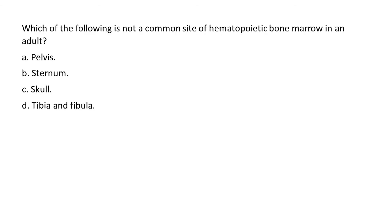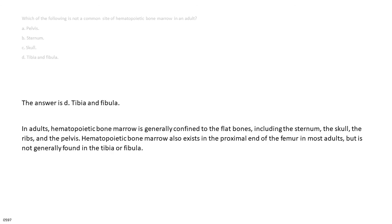Which of the following is not a common site of hematopoietic bone marrow in an adult? A. Pelvis. B. Sternum. C. Skull. D. Tibia and fibula. The answer is D, tibia and fibula. In adults, hematopoietic bone marrow is generally confined to the flat bones, including the sternum, the skull, the ribs, and the pelvis. Hematopoietic bone marrow also exists in the proximal end of the femur in most adults, but is not generally found in the tibia or fibula.